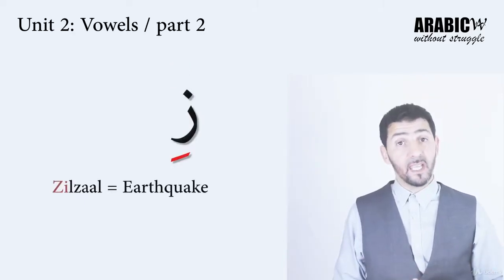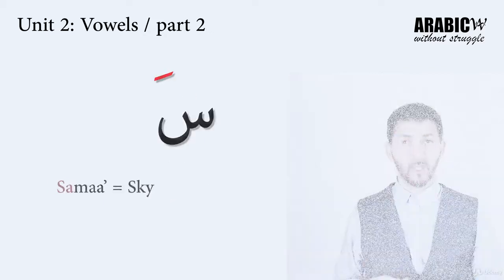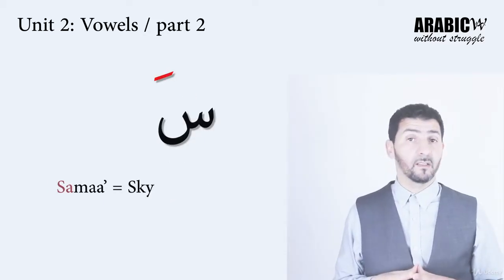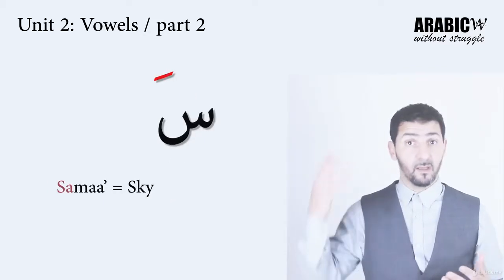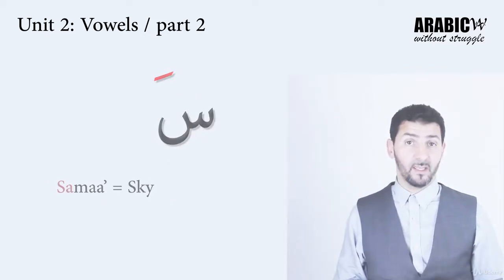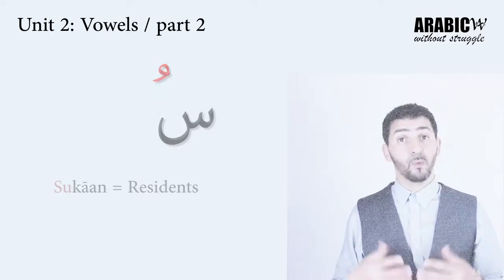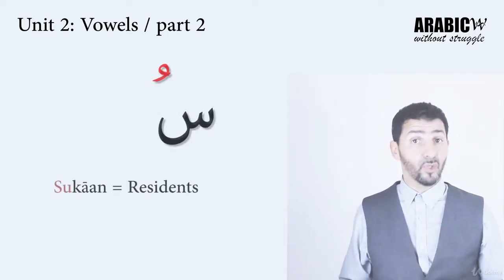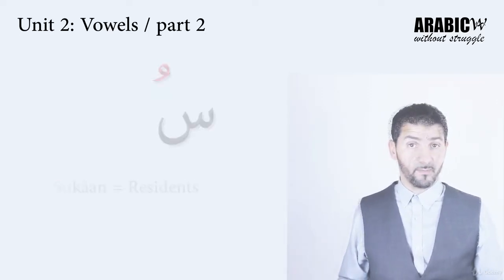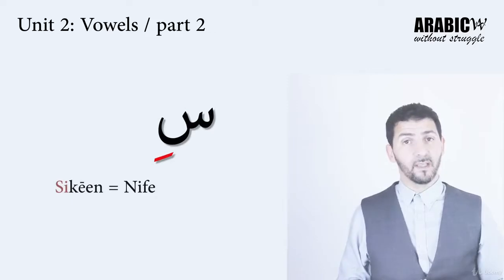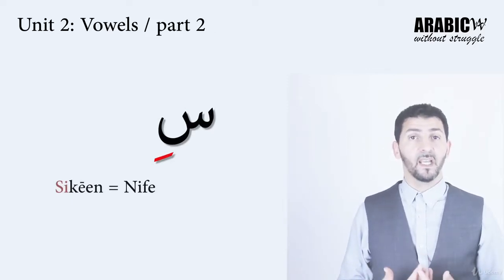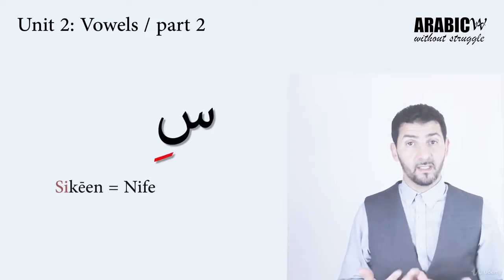سين with فتحة makes سا, like سماء — meaning 'sky'. سين with ضمة makes سو, like سكان — meaning 'residents'. سين with كسرة makes سي, like سكين.